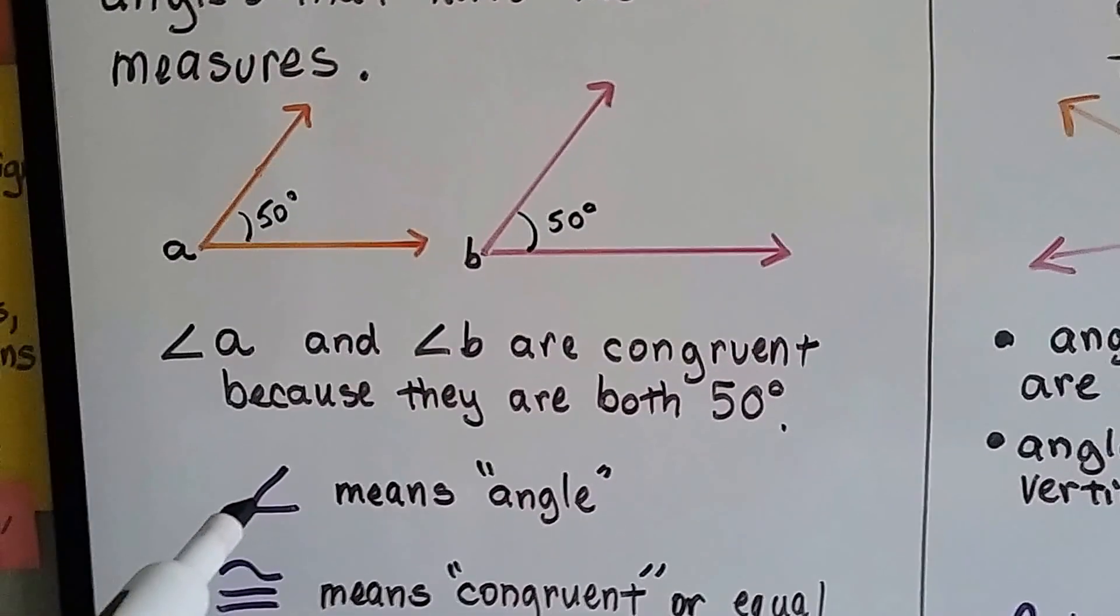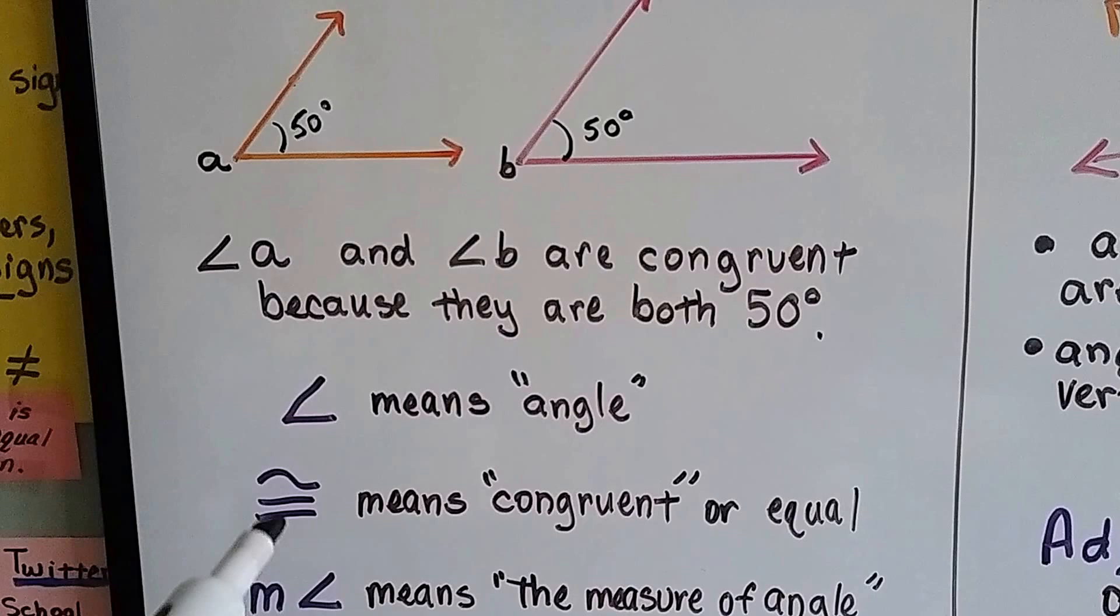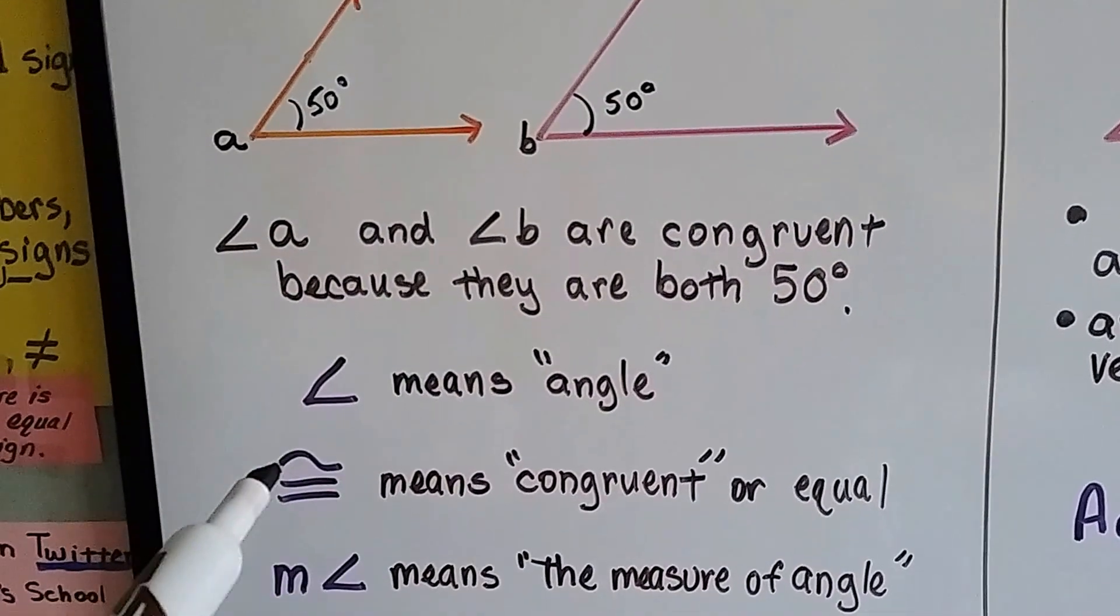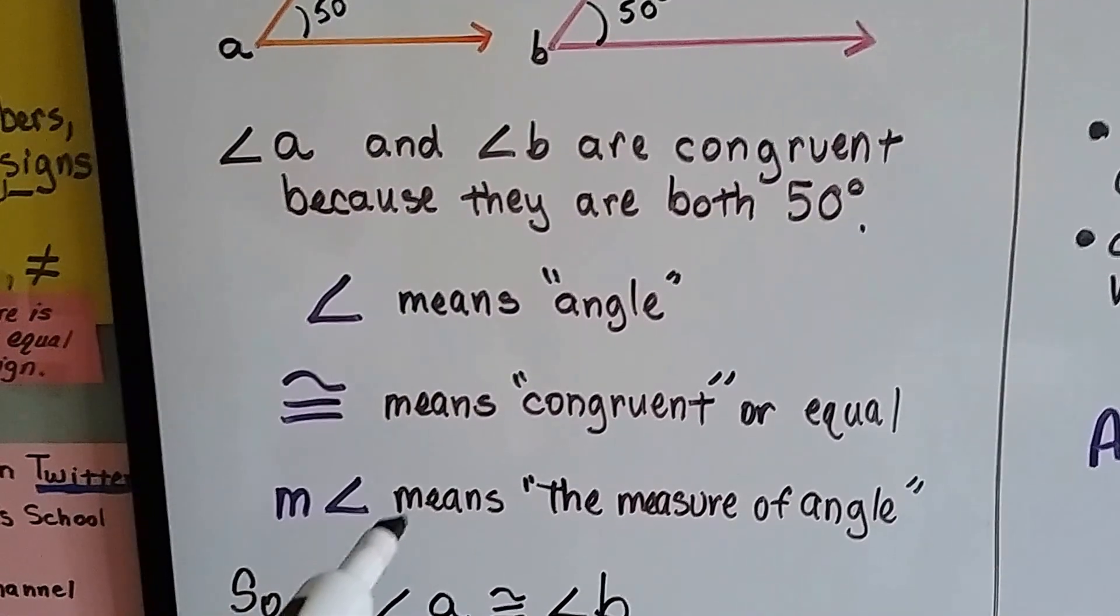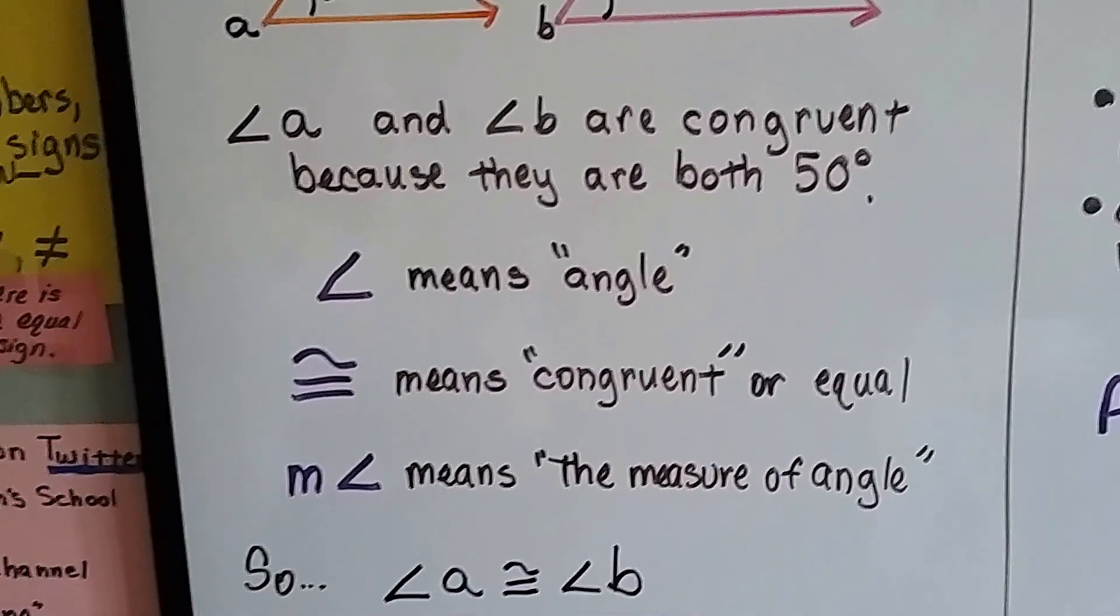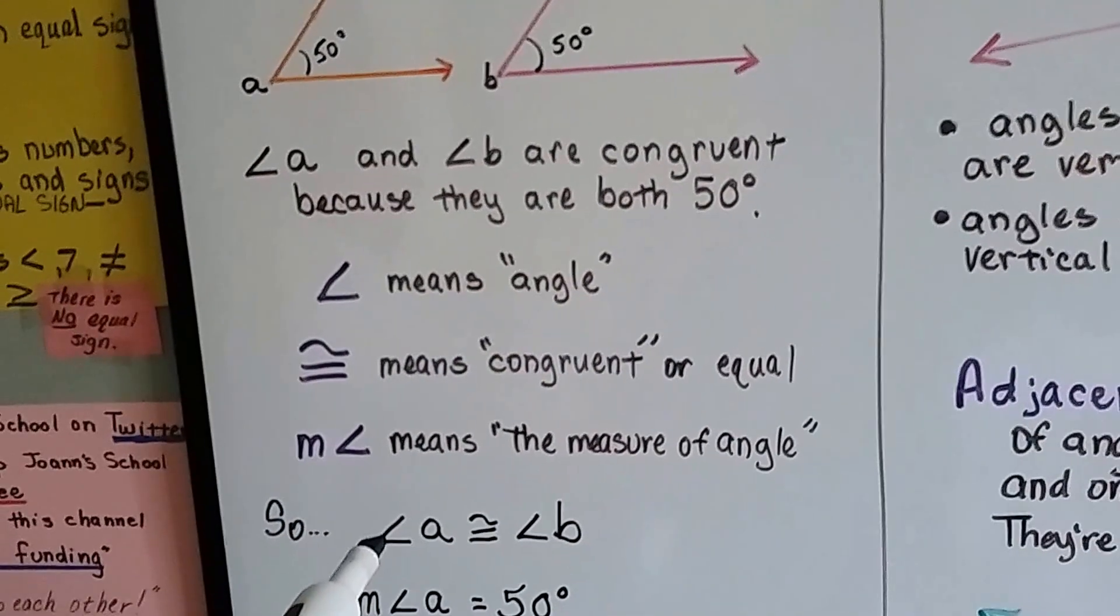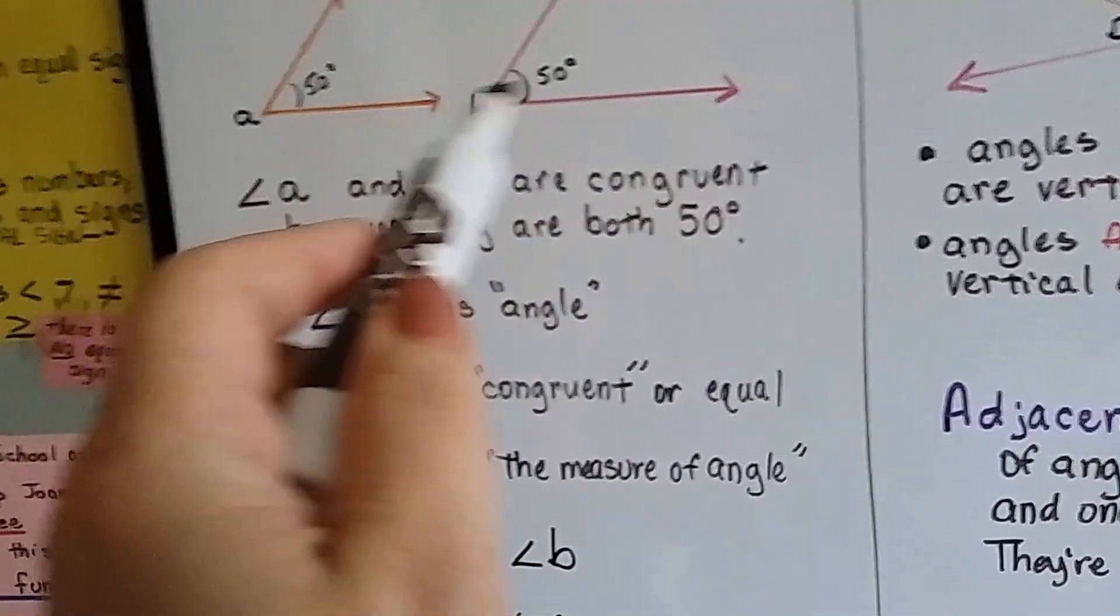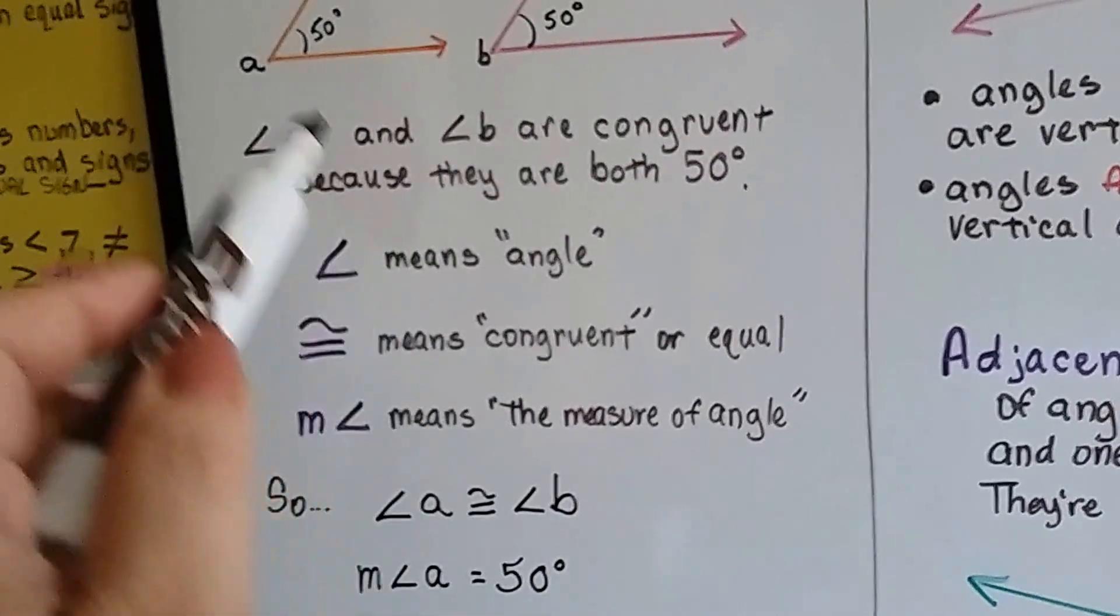When you see this little sign, that means angle. When you see this symbol, it means congruent or equal. It's an equal sign with like a little curve on top. If you see an M and then the angle sign, it means the measure of angle. So, with these symbols, we can say angle A is congruent to angle B, because they're both 50 degrees. We can say the measure of angle A equals 50 degrees.